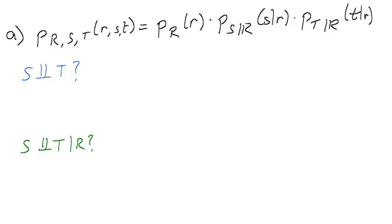Let's look at part A of the problem we just described. We have PRST equals PR times P of S given R times P of T given R. If we were to draw a little diagram for R, S, and T, then we would say first there's R, then from R there's S, so R kind of tells you how to get S, and then from R there's T.